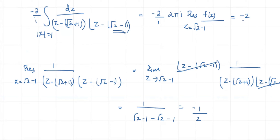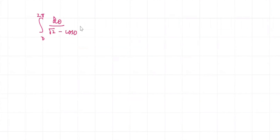Hence the integral value equals (−2/i) × 2πi × (−1/2), which simplifies to 2π. Therefore, the integral from 0 to 2π of dθ/(√2 − cosθ) equals 2π.